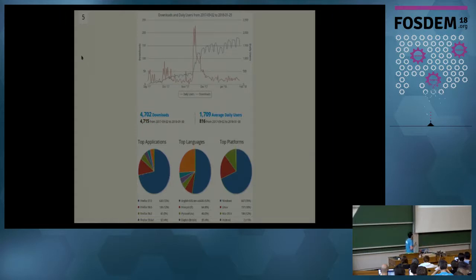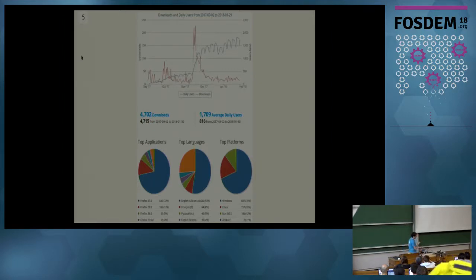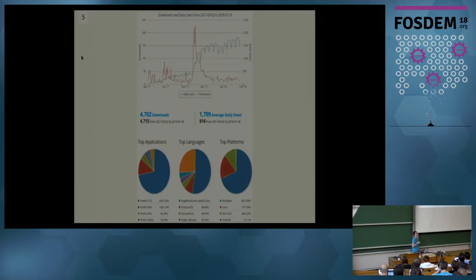This is an example of my most famous extension — it's always better to start with real cases. This is a social share extension that implements a feature removed with Firefox 57. As you can see, I released the extension in September. Now it has these users, and I am not a business, so I only uploaded it on AMO.